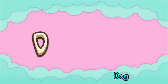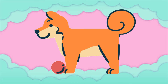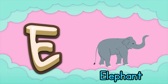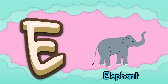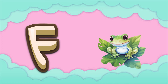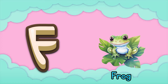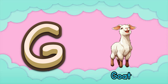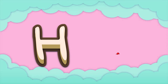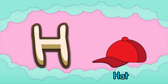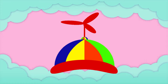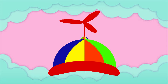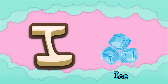Dum-dee-da-dum-dee-dum. E is for elephant, e-e-elephant. F is for frog, f-f-frog. G is for goat, g-g-goat. H is for hat, ha-ha-hat.